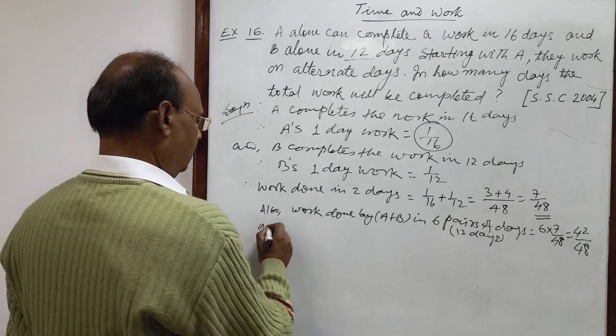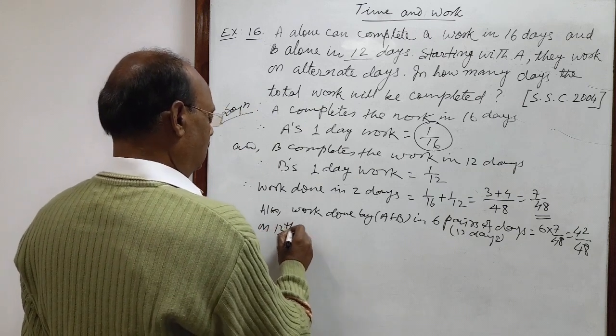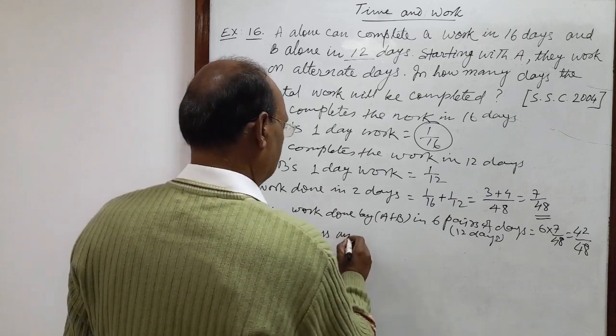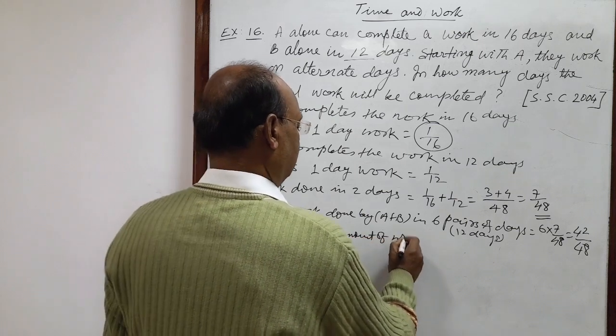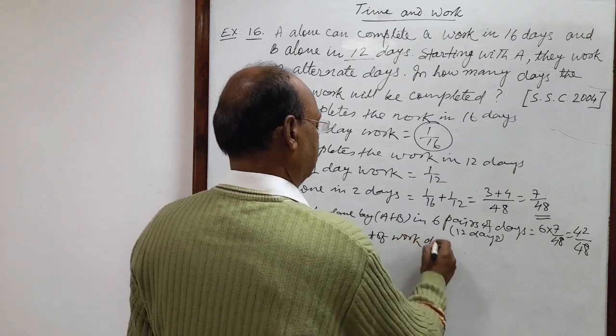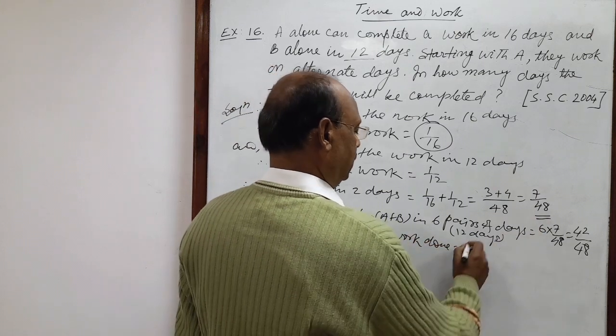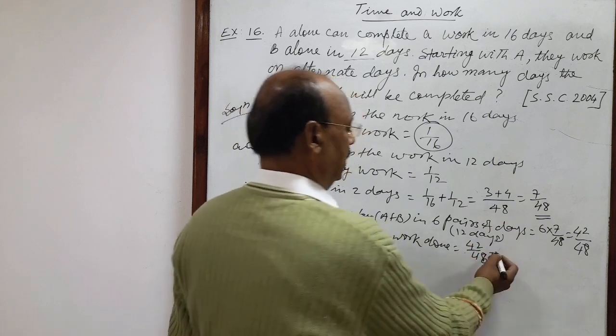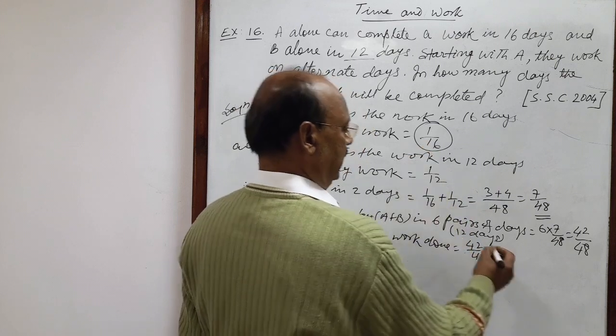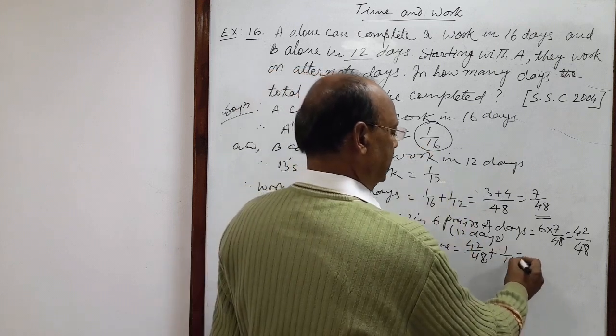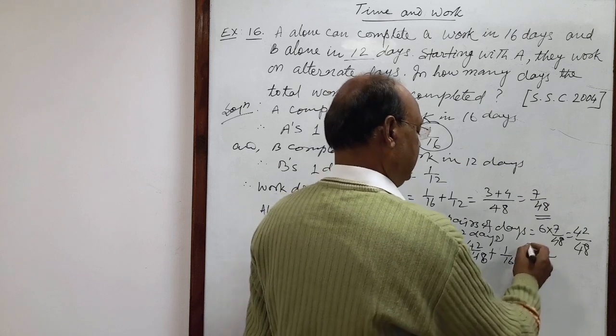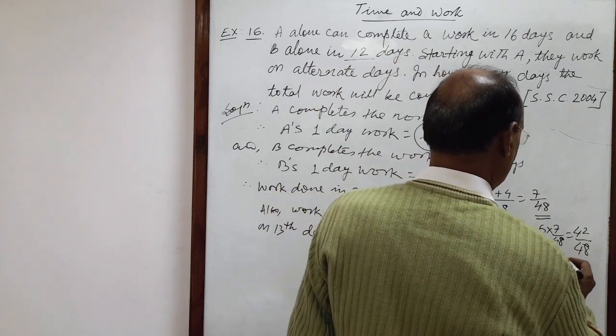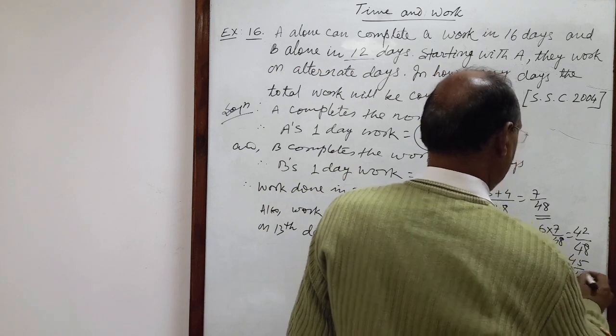On 13th day, amount of work done already is 42/48, plus how much? This much work done by A, 1/16. Simplify it. LCM will be 48. 42 plus 3, this is equal to 45/48.